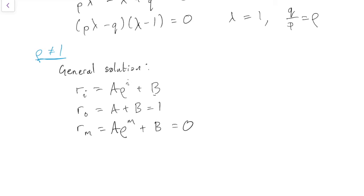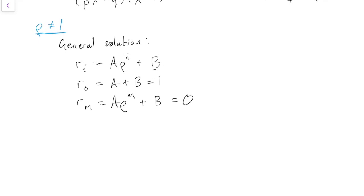And so now we've got two simultaneous equations, which again you've got to solve in any way you like to solve simultaneous equations. For example, one way to solve these simultaneous equations would be to take b equals 1 minus a from the first equation and substitute that into the second, which would give you a rho to the m plus 1 minus a equals 0, and thus a equals 1 over 1 minus rho to the m. Again, you might just need to pause the video just for a second to check my algebra there.